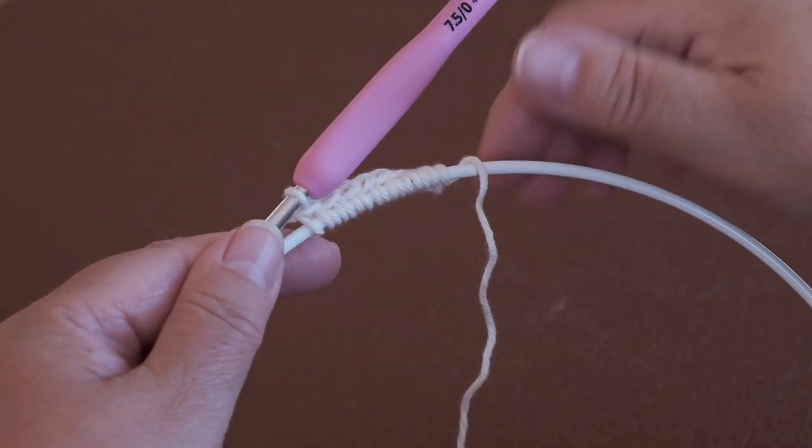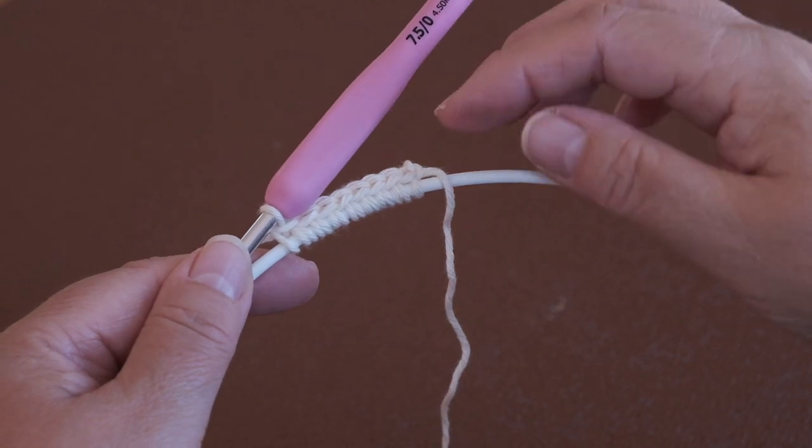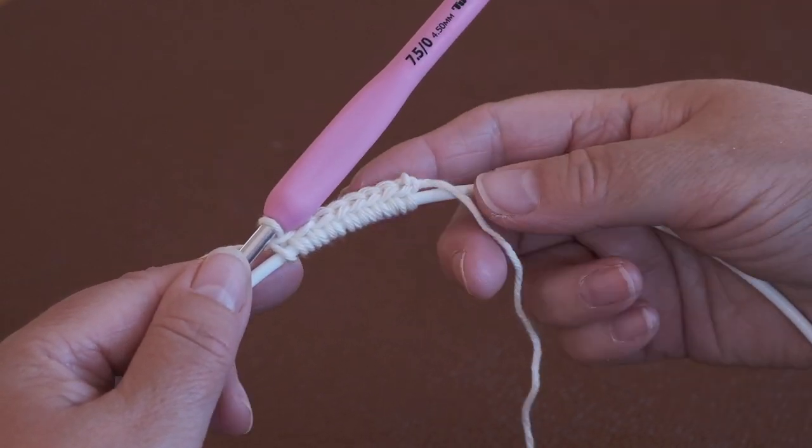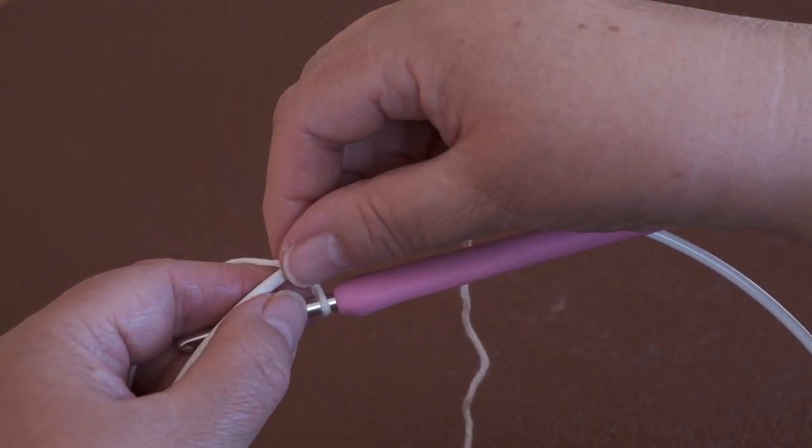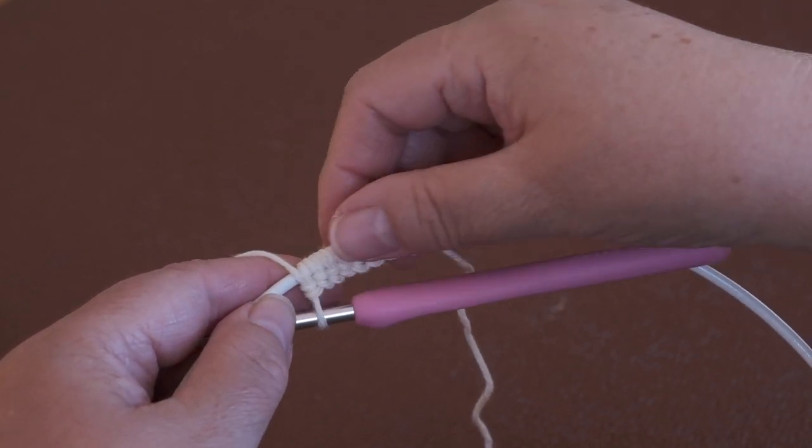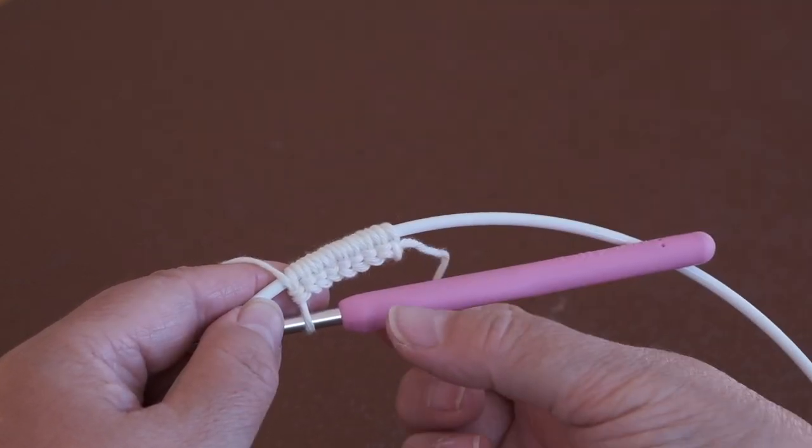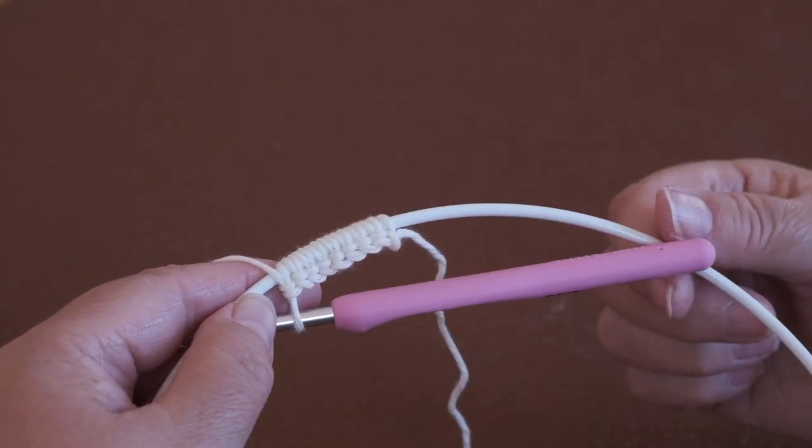Now you can either leave the tops along the top if your pattern says that's what you need, or you can push them to the bottom and have them on the inside of your ring if you're wanting to catch something to it from the inside.